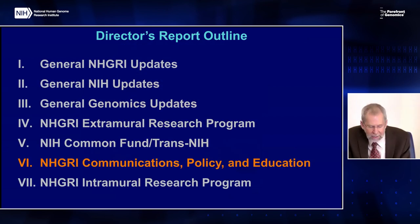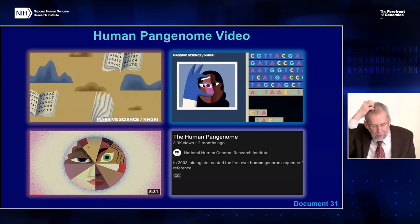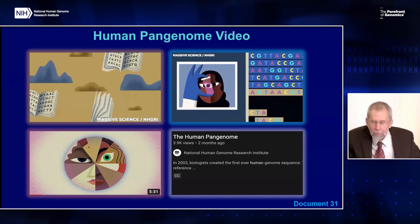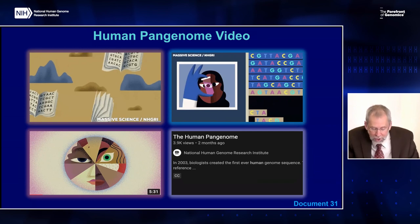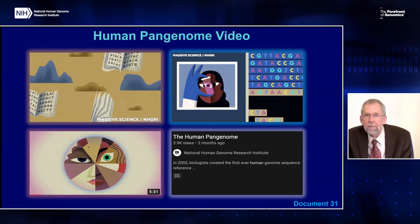Moving on to NHGRI activities in the areas of communication, policy, and education: in November, NHGRI's Communications and Public Liaison Branch released a short video in collaboration with Massive Science. The video highlights the Telomere-to-Telomere Consortium's work to complete the genome and the Human Pangenome Reference Program's efforts to generate reference sequences that embody all of humanity. The video has garnered thousands of views within the last two months and received immensely positive feedback from both the scientific community and general audiences.